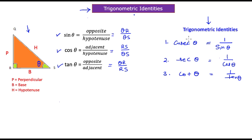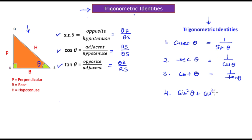These three standard identities we have already learned. Now we introduce three more. The fourth identity: if you take the square of sine theta and add the square of cos theta, the sum equals one. Let's prove this using the Pythagorean theorem.